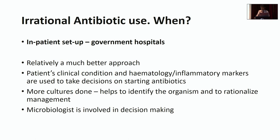Unfortunately, some doctors believe the best antibiotic is the most expensive one, which is not the case. In government hospitals, things are somewhat better — haematological parameters and inflammatory markers like CRP are used to guide antibiotic decisions, more cultures are done, and microbiologists are often involved in decision-making. This results in a more rational prescription pattern in government hospitals.